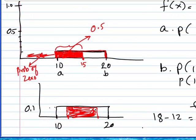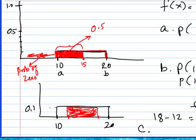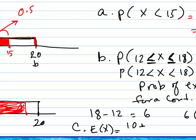Part C says compute the expected value of X, and we know for a uniform distribution the expected value is the minimum value A plus the maximum value B — which in this case is 20 — divided by 2, and that would be 15 for this problem.